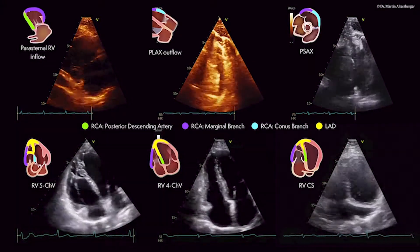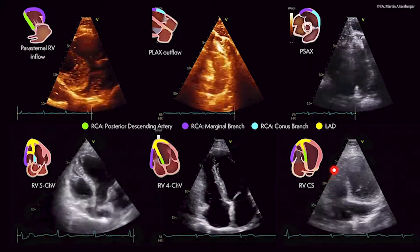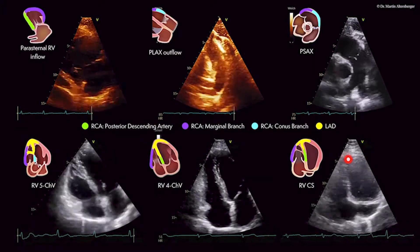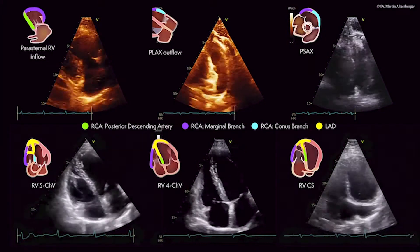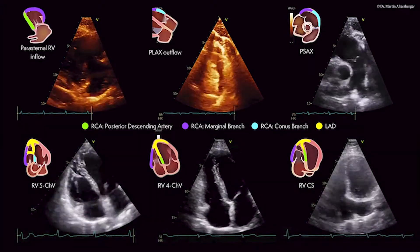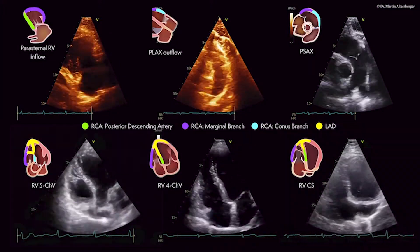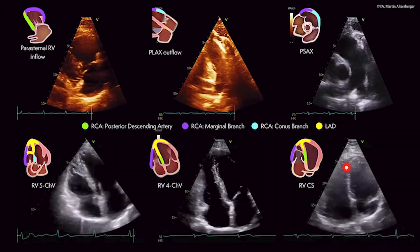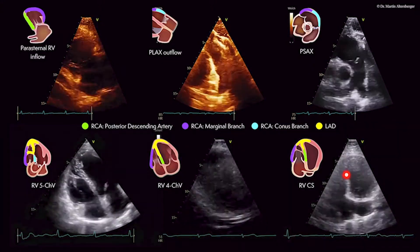In the right ventricular coronary sinus view, we have again the marginal branch, which is responsible for the lateral wall of the right ventricle, the LAD for the apical and septal regions, so the interventricular septum, and partly the posterior descending artery for the more basal to mid parts of the interventricular septum. Keep in mind, the left anterior descending artery always supplies this area — it doesn't matter which type of coronary perfusion the patient has.